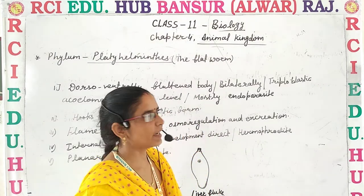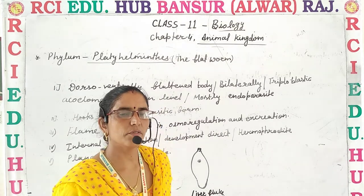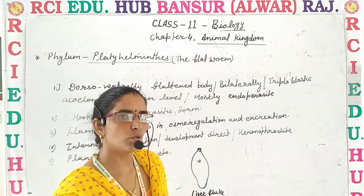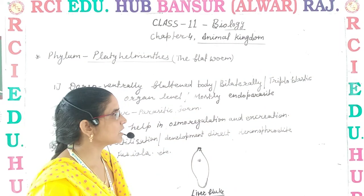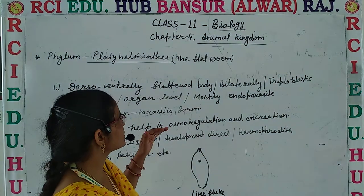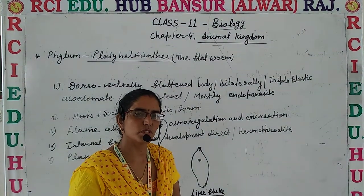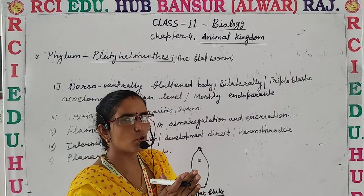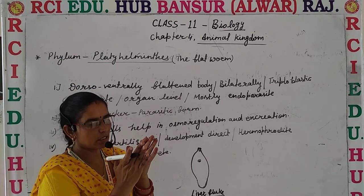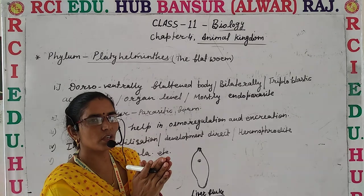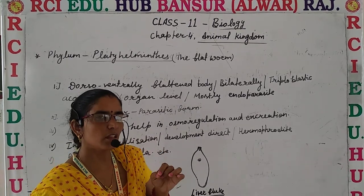The next phylum is Platyhelminthes. Before this we discussed Ctenophora. As the name suggests, Platyhelminthes is also known as flatworms. Flatworms means their body is dorsoventrally flattened — they have a very slim and very thin body type.